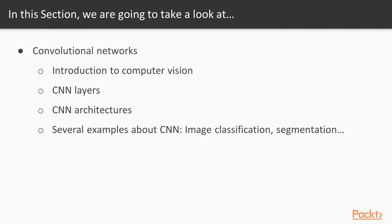Then we're going to talk about the convolutional layers — that is convolutional layers and max pooling. Then we're going to see the convolutional architectures, with lots of different models in the literature, and finally several examples dealing with CNNs, such as image classification, segmentation, and so on.